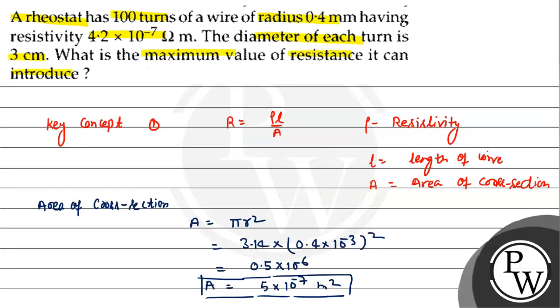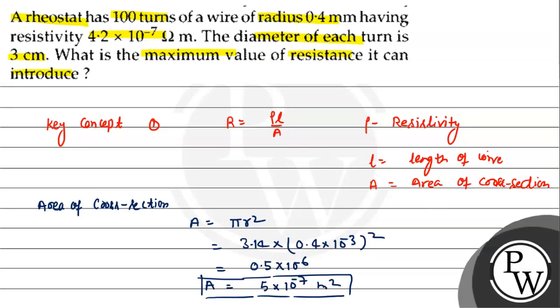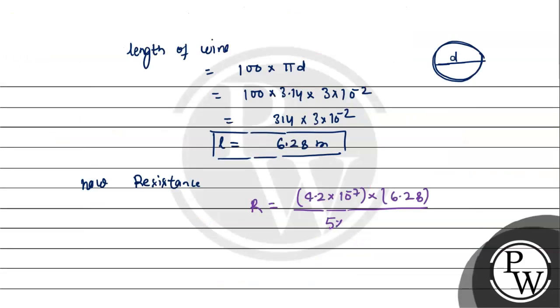So 4.2 × 10^-7 × L which is 6.28, divided by area which is 5 × 10^-7.